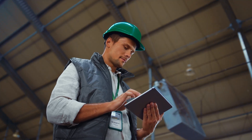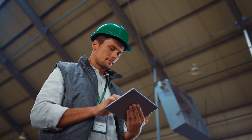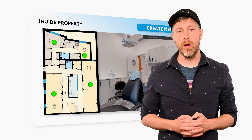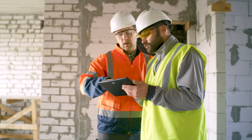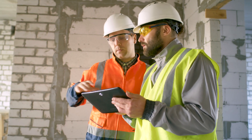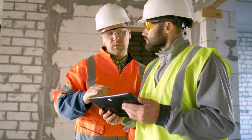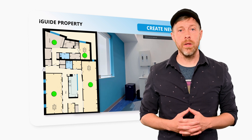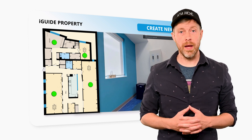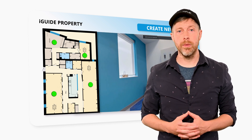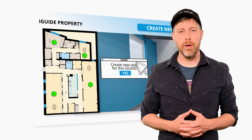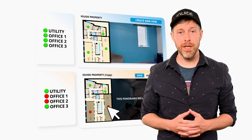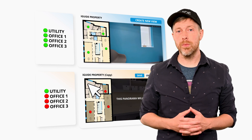For our next example, imagine that a facility manager wants to use their iGUIDE to assist with repair or maintenance tasks for an office building. They may want to direct a contractor to a specific room while keeping sensitive information in the other areas of the building hidden. Just like in the previous example, creating a separate view would allow them to make an iGUIDE that only shows the utility room and spaces leading to it. The contractor will only see what they need to see, and won't have access to any sensitive information from elsewhere in the property.